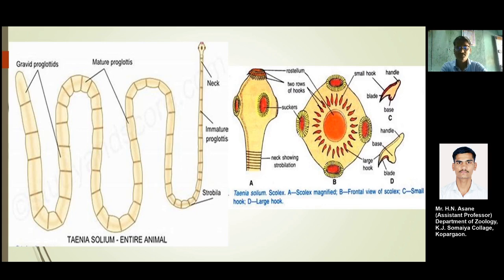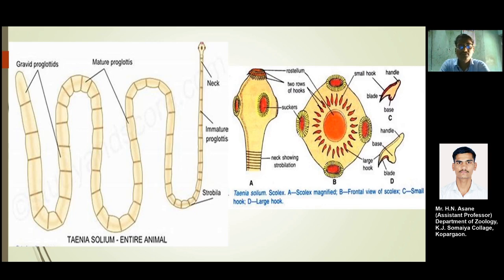The tapeworm has up to 1000 segments. The mature proglottids reach their reproductive stage, progressing towards gravid proglottids. Copulation and fertilization occur between the mature proglottids and the gravid proglottids. The last gravid segment is elongated — its length is greater than its breadth — because it is packed with eggs.